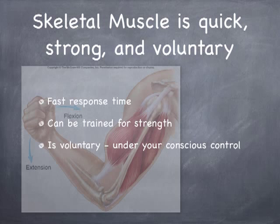The other two types of muscle we're going to call involuntary. Do you have anything to say about your heartbeat? Can you slow it down or speed it up right now? Can you influence your digestion — say, let's digest a little slower or a little faster? These are things that are not under your conscious control.